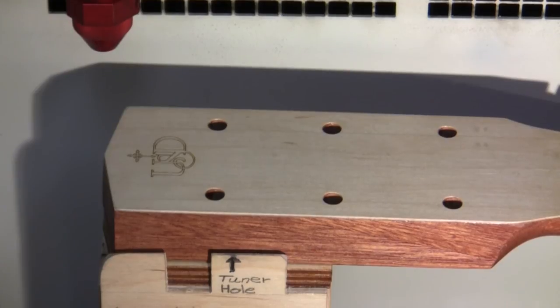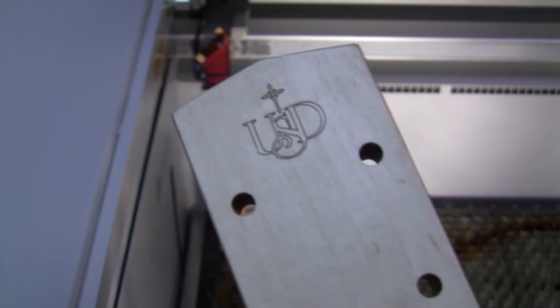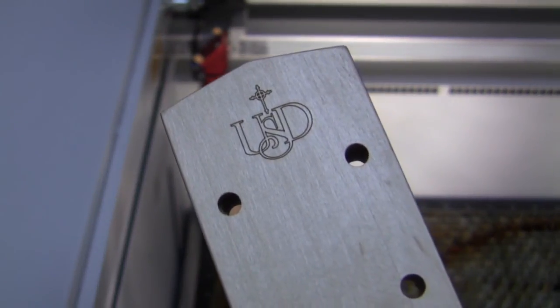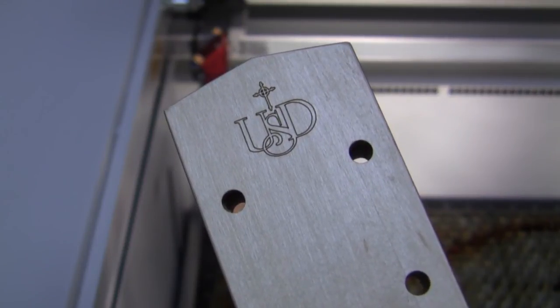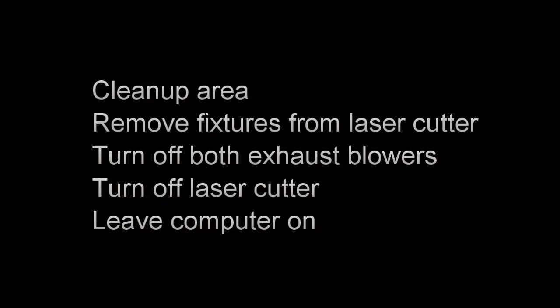When you're confident that you have it in the right place, then you can cut it. This is what I got, centered left and right and in the middle of the area. Remove the fixtures, turn off the blowers, the laser cutter, and continue with installing tuners.